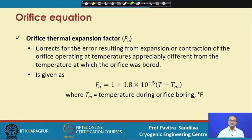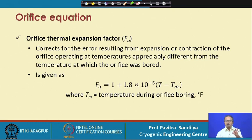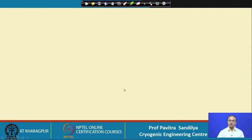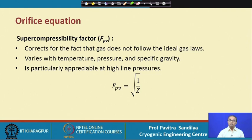The thermal expansion factor FA corrects for any expansion or contraction of the orifice due to temperature change — if temperature is very high the orifice itself expands, and if low it contracts. This contraction and expansion with gas temperature is corrected by the formula FA, which has been given empirically. The super compressibility factor — the compressibility factor — accounts for changes in pressure, temperature, and specific gravity.